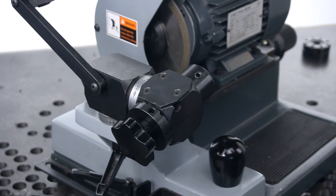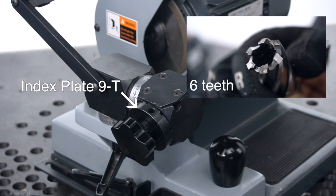The machine is supplied to you with the index plate 9T installed, so first we'll have to change it to the right index plate because our cutter has 6 teeth, not 9.